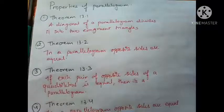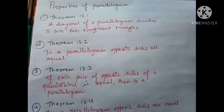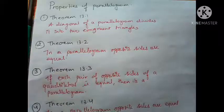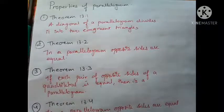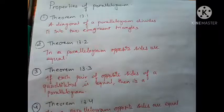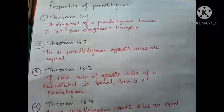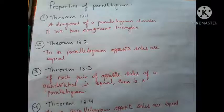Now we'll learn about some properties of a parallelogram. A parallelogram is a quadrilateral in which opposite pairs of sides are parallel and equal. There are theorems we'll go through. Theorem 13.1 states: a diagonal of a parallelogram divides it into two congruent triangles. You don't have to memorize these theorems — the more questions you do, the more the properties will become natural to you.